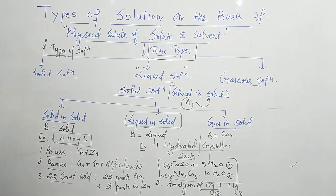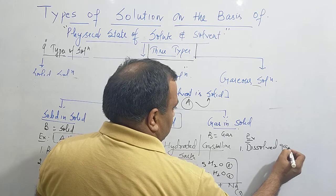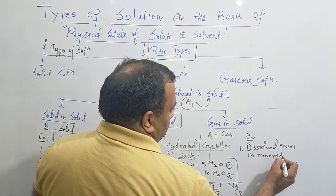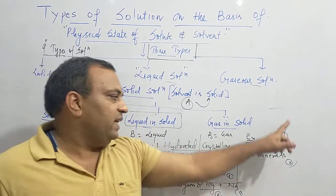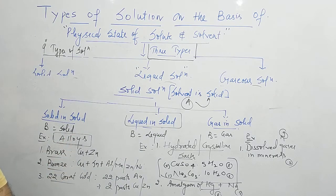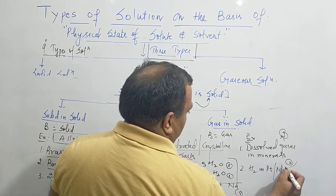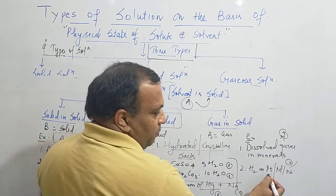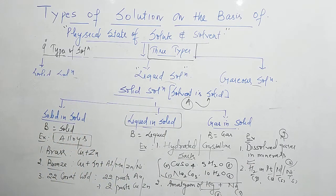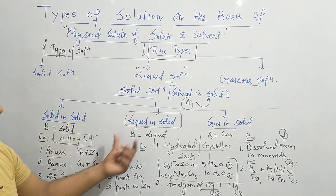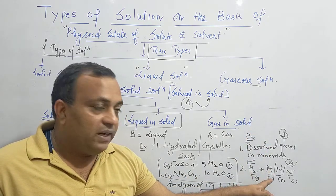Now third: gas-in-solid solutions. First example is dissolved gases in minerals — minerals are solid and the gases dissolved in them are gaseous, so it is gas in solid. Second example: hydrogen gas in platinum, palladium, or nickel — these metals are solid and hydrogen is gaseous, so this also comes under gas-in-solid solutions.